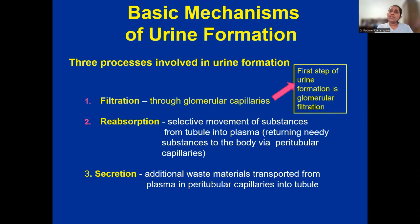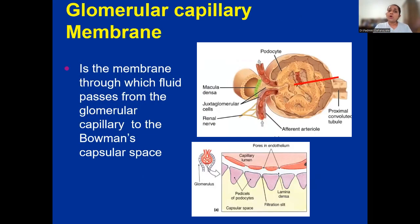Reabsorption is the selective movement of substances from the tubule into plasma — returning needed substances, because some are filtered without discrimination. These will be reabsorbed as the filtrate moves through the rest of the nephron. Secretion means additional waste materials not filtered through the glomerular capillaries at the initial step will be secreted into the renal tubules. Now, the glomerular capillary membrane is a very important structure when talking about GFR.